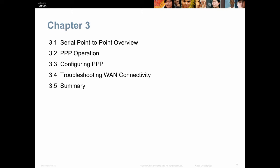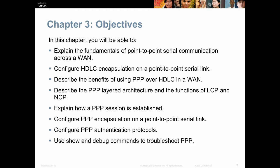We'll take a look at different types of point-to-point connections, how to configure and troubleshoot them. At the end of this lecture, you should be able to explain the fundamentals of point-to-point serial communications across a WAN, configure a simple HDLC encapsulated point-to-point serial link, describe the benefits of using PPP over HDLC in a WAN environment, describe the PPP layered architecture and the functions of both LCP and NCP, explain how a PPP session is established, configure PPP encapsulation and authentication, and use different show and debug commands to troubleshoot PPP functionality.